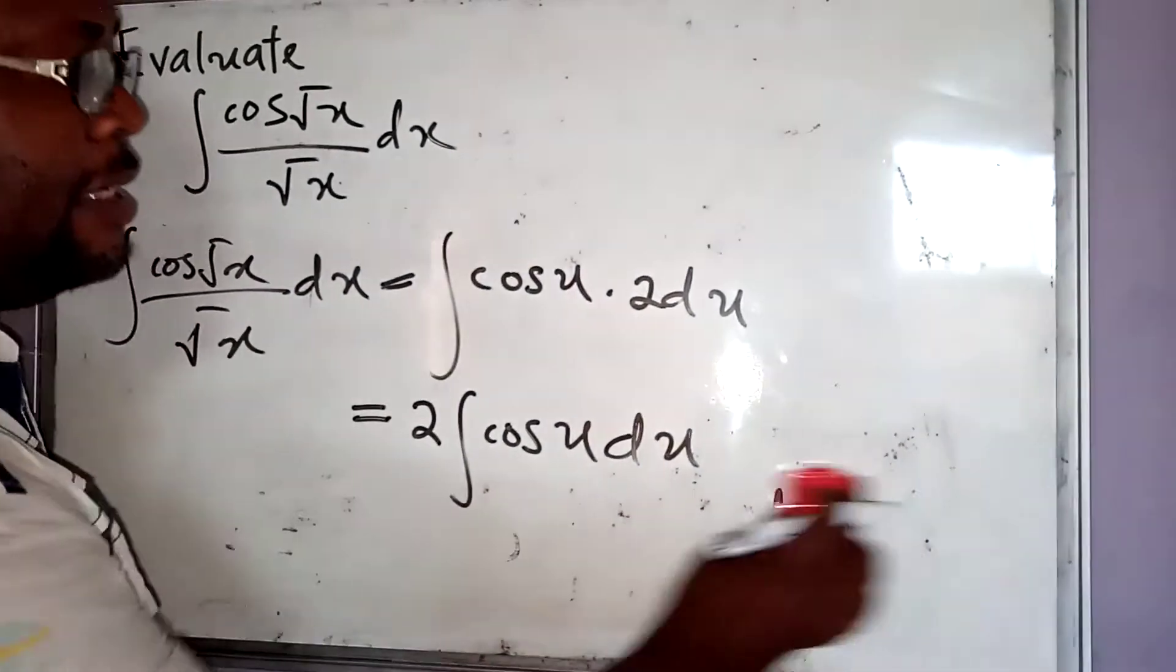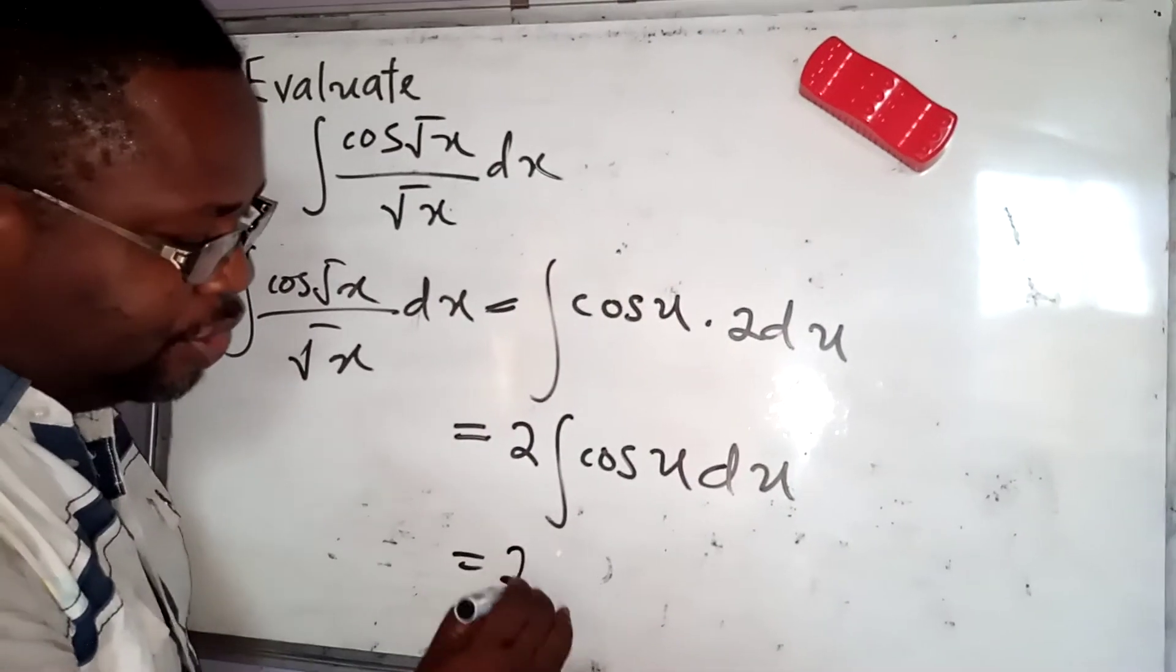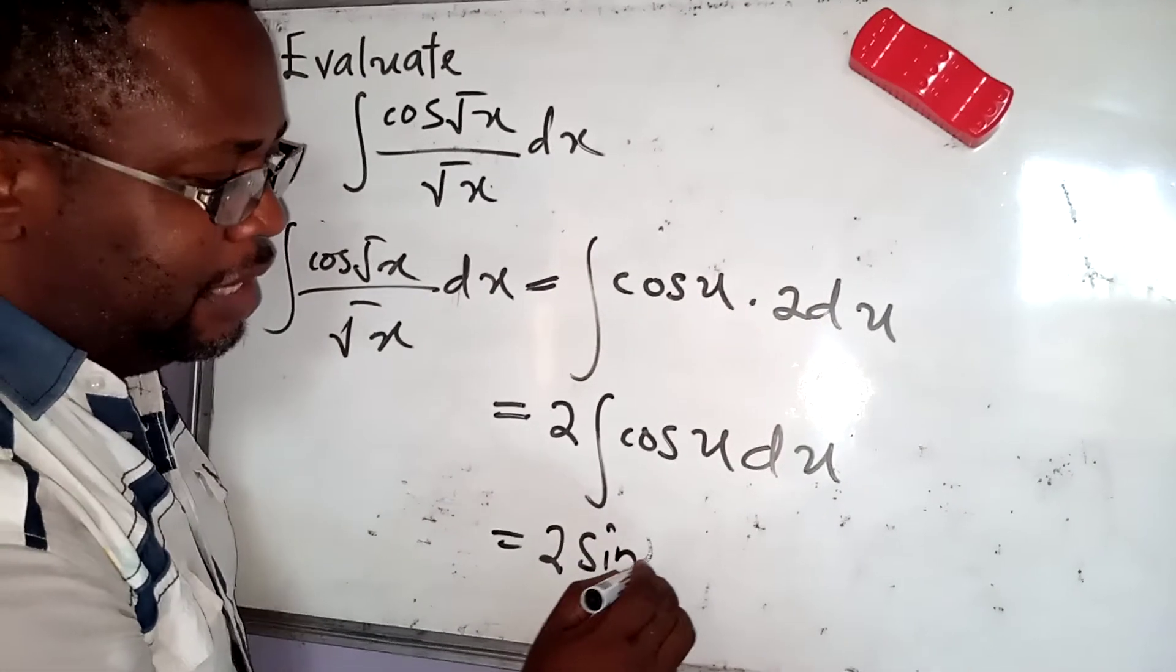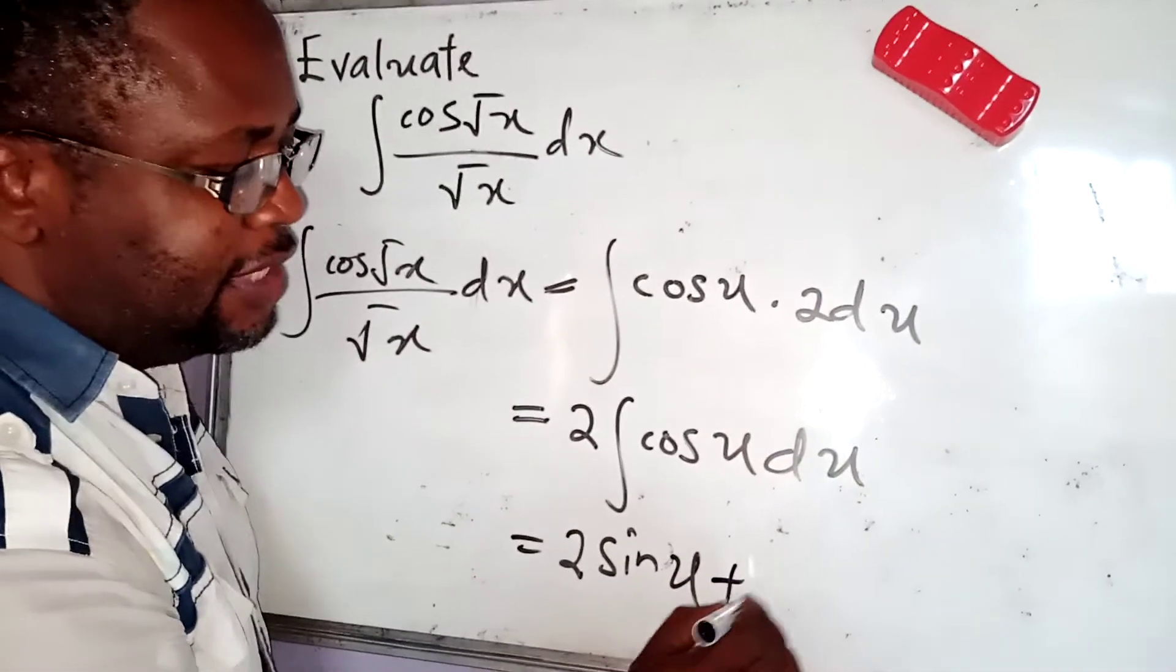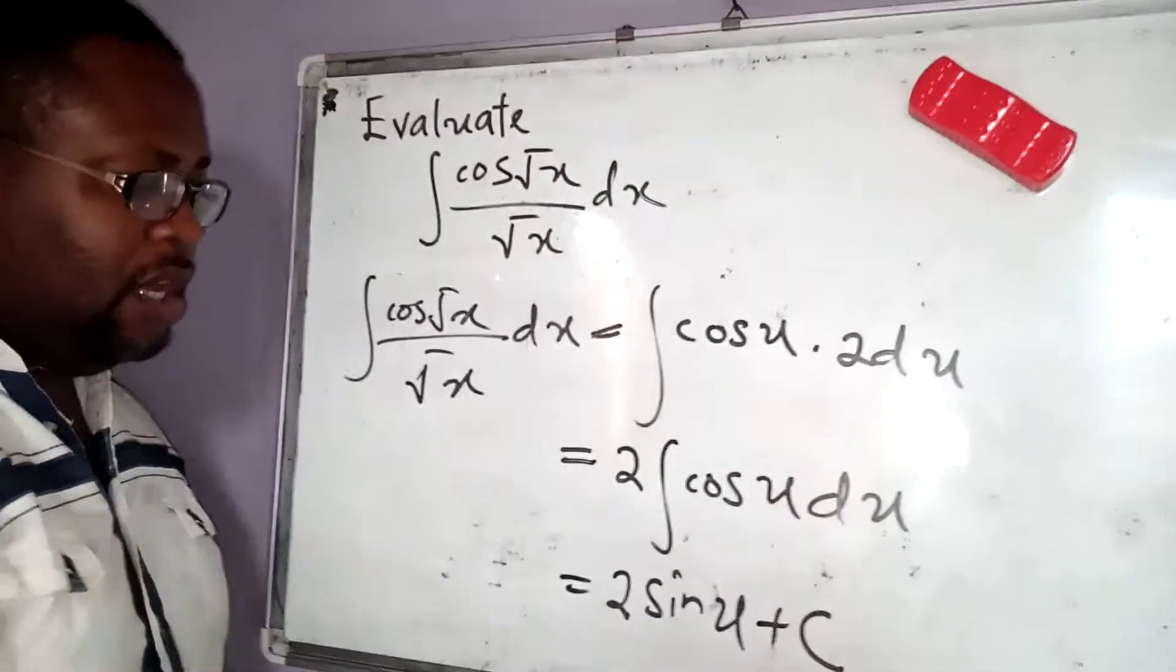Now, when we integrate cos u, we simply get sine u. So this simply becomes 2 sine of u plus a constant of integration. This is an indefinite integration.